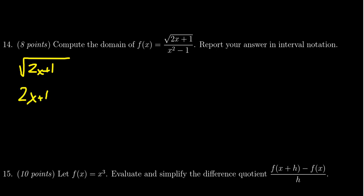It can be equal to zero, that's okay. So we have to solve the inequality 2x plus 1 is greater than or equal to zero. We subtract 1 from both sides, we get 2x is greater than or equal to negative 1. We divide by 2. We get x needs to be greater than or equal to negative 1 half. So that's what the domain of the numerator requires.